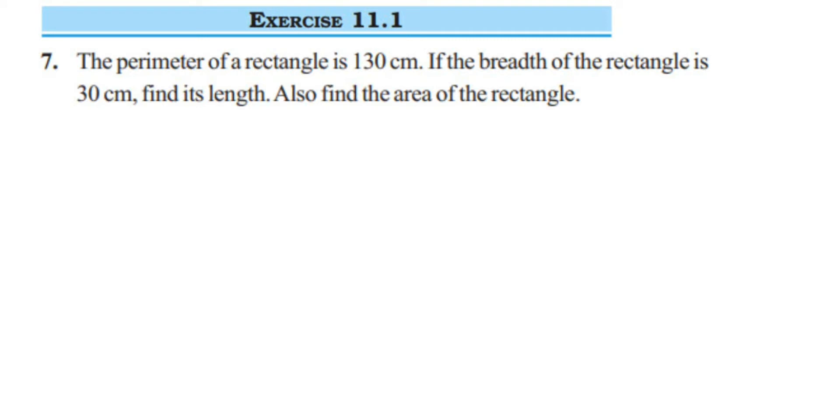Hey everyone, here's a question from Exercise 11.1, the 7th question from the perimeter and area chapter. The question is: the perimeter of a rectangle is 130 centimeters. If the breadth of the rectangle is 30 centimeters, find its length. Also find the area of the rectangle.